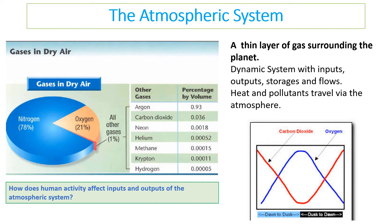You need to know it's a dynamic system, which means it constantly changes because there are constantly inputs and outputs. If you look at the graph at the bottom, you can see that even during the day the amount of oxygen goes up as carbon dioxide drops to a higher level because of photosynthesis, and then at nighttime the opposite happens as plants respire but stop doing photosynthesis.